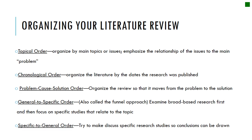There are different ways of organizing a literature review: topical order, chronological order, problem-cause-solution order. You can move from general to specific, or from specific to something more general — for example, starting with Twitter and censorship and then moving to the broader context of Malaysia. The way you organize your literature review is going to depend on you and your supervisor, your own writing style, the way your thoughts flow.